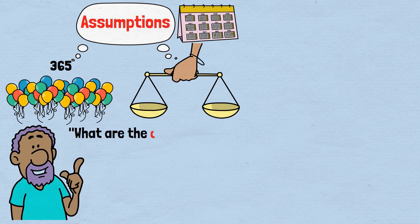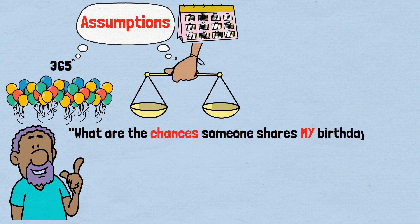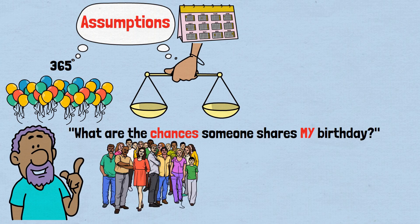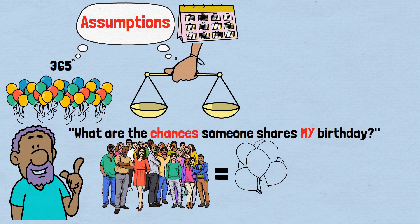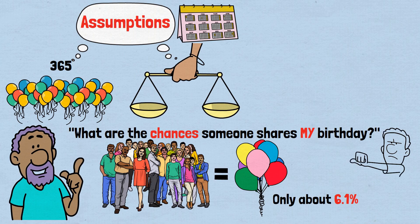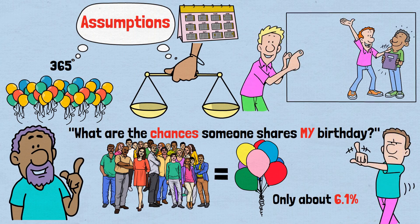Most of us approach this problem from a self-centered viewpoint. We ask, what are the chances someone shares my birthday? If you're in a room with 22 other people, the chance someone matches your specific birthday is indeed small, only about 6.1%. But that's not what the birthday paradox asks. It's asking whether any two people in the room share any birthday. And that's a completely different question.